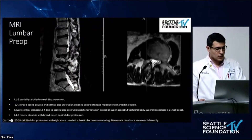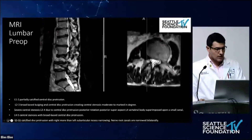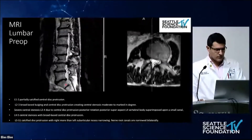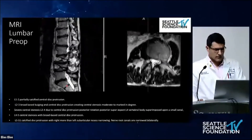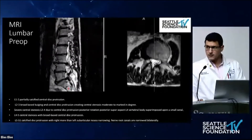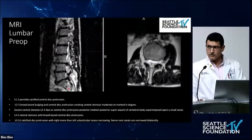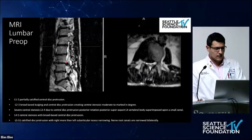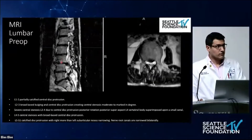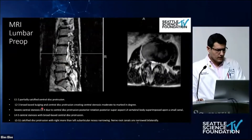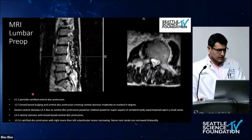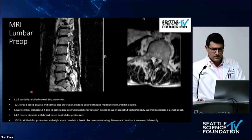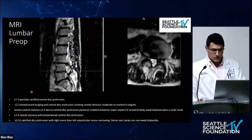His pre-op MRI showed multilevel stenosis mainly from L1 to L5. The most severe was over the L3-L4 area. He had multiple levels of degeneration with foraminal stenosis.